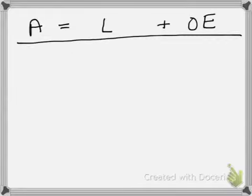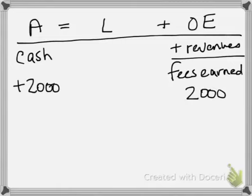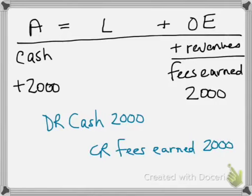The fifth transaction was that we performed services for cash for two thousand dollars, so we have two thousand dollars more cash and the revenue account fees earned increased by two thousand dollars. We would debit cash for two thousand and credit the revenue account fees earned for two thousand.